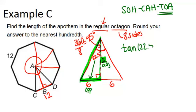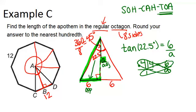So our equation will be the tangent of 22.5 degrees must equal 6, the opposite side, over a, the adjacent side. Now the tangent of 22.5 degrees is approximately 0.414. So once I've substituted that in, I can cross multiply to start solving for a. I get 0.414a equals 6.